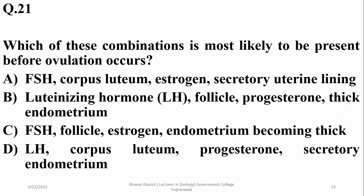Question number twenty: events of the menstrual cycle are regulated by pituitary gonadotrophins. Which combination is most likely present before ovulation? Before ovulation, FSH, follicle development, and endometrium thickening occur. Corpus luteum and high progesterone levels are not found before ovulation, so option C.